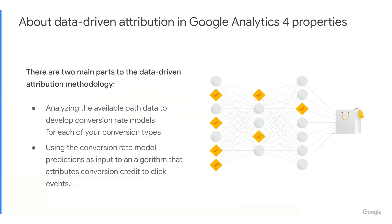The resulting models assess how likely a user is to convert at any particular point in the path given exposure to a particular click event. The second part is using the conversion rate model predictions as input to an algorithm that attributes conversion credit to click events. The data-driven attribution model assigns credit based on how the addition of each click event to the path changes the estimated conversion probability. In addition to looking at data from both converting and non-converting paths, the data-driven attribution algorithm uses features including time between the click event and the conversion, format type, and other query signals to calculate this credit.